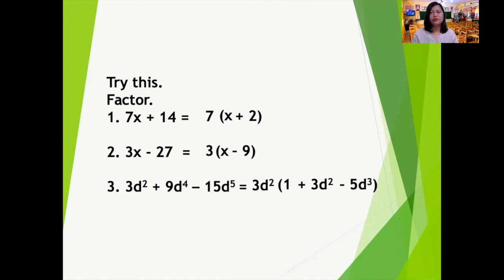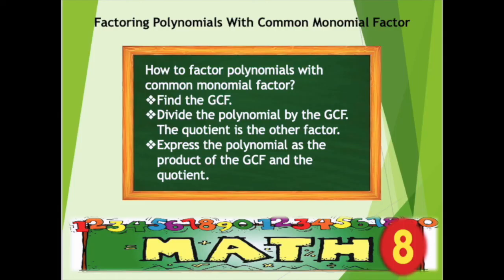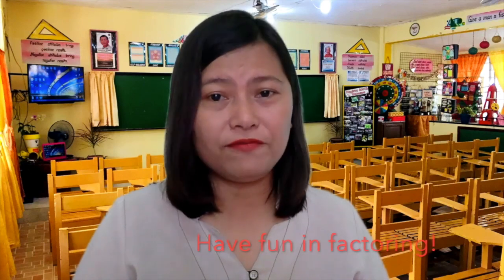I hope you got two out of three or a perfect score! So, how do we factor polynomials with common monomial factor? First, find the greatest common factor. Then, divide the polynomial by the greatest common factor — the quotient is the other factor. And express the polynomial as the product of the greatest common factor and the quotient. That's all for now, mathematics lovers. Don't forget all the things you have learned. Have fun in factoring!